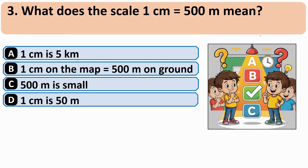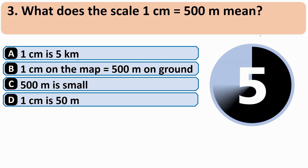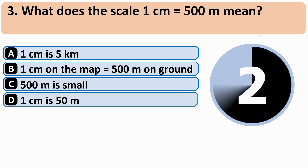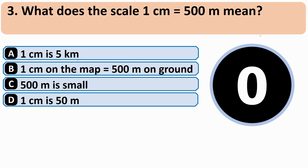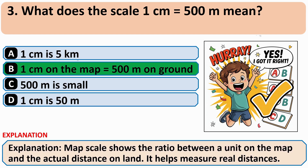What does the scale '1 centimeter is equal to 500 meters' mean? The correct answer is B — 1 centimeter on the map is equal to 500 meters on the ground.